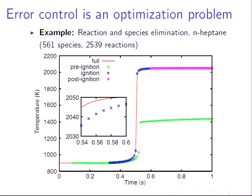There are three models here, and one of the main points I want to get across is that if you choose your training set of data for your error control correctly, then your reduced model will be very accurate. But if you try to use a training set in a regime that doesn't apply — for example, a model tuned to pre-ignition conditions with very few reactions and species — and then try to use it to model ignition where there are lots of reactions and species, you're going to get a temperature that's totally garbage. Whereas if you use the ignition model, it predicts very well.